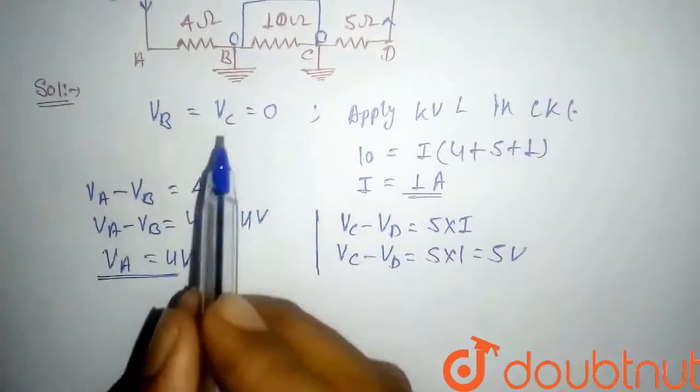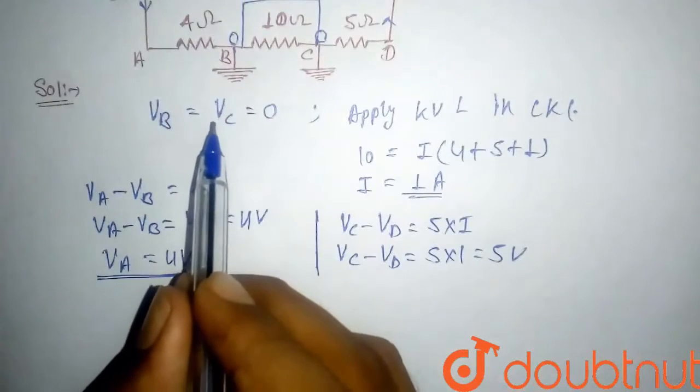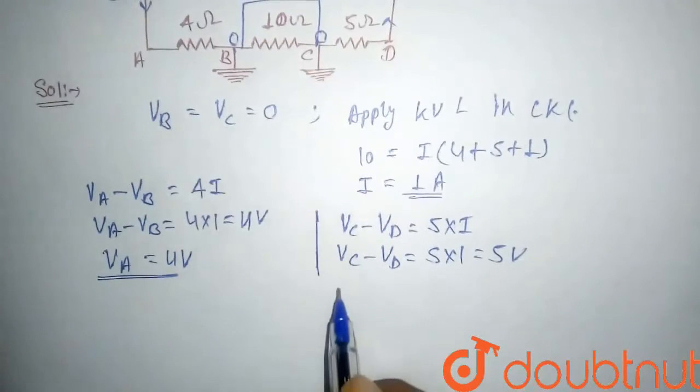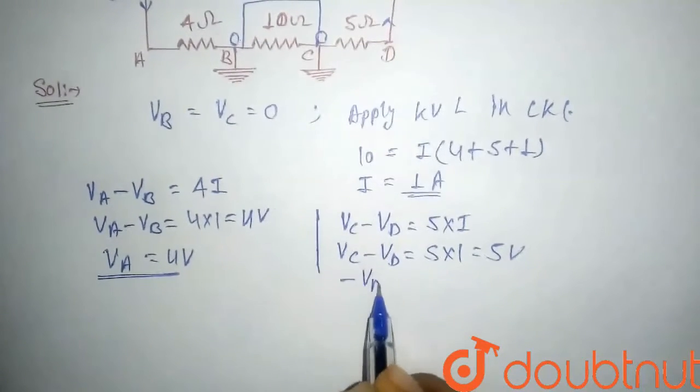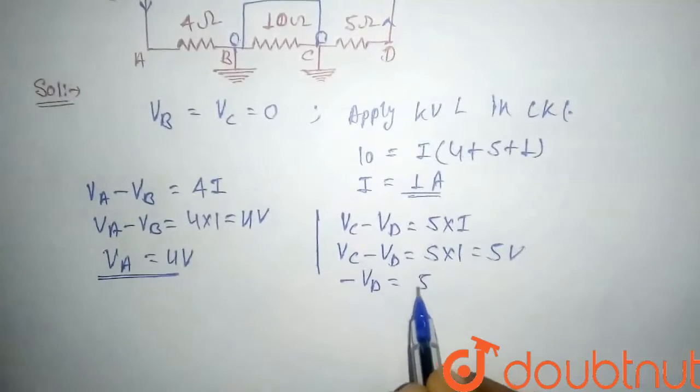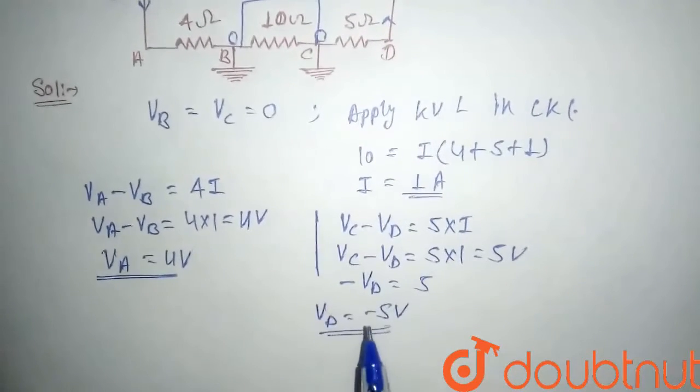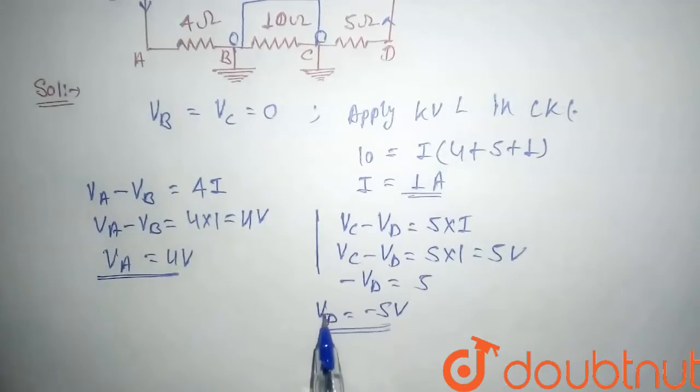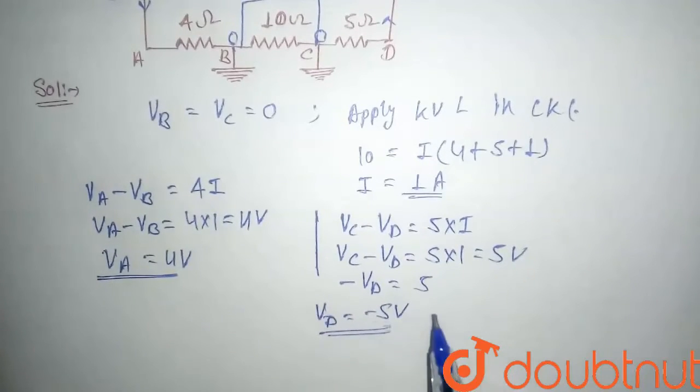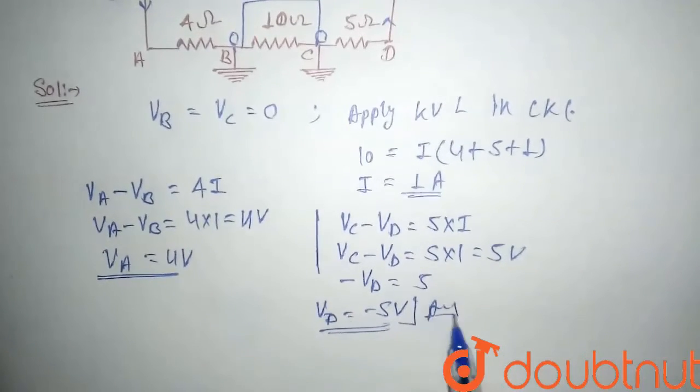So here, we know that the potential at point C is 0, so minus VD will be equal to 5. So VD will be equal to minus 5 volt. So these are the potentials at point A and D. This will be our answer. Thank you.